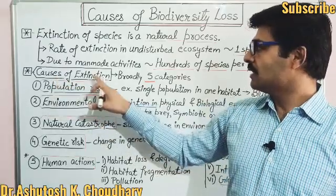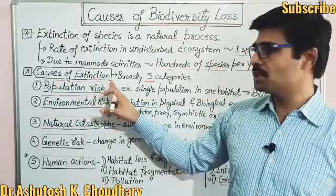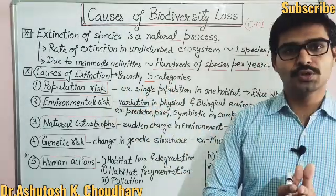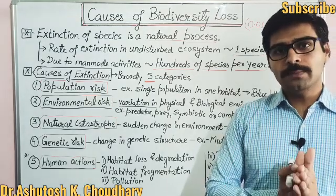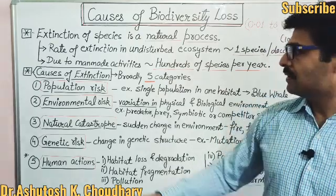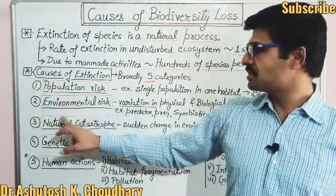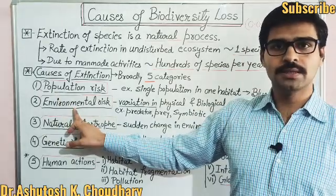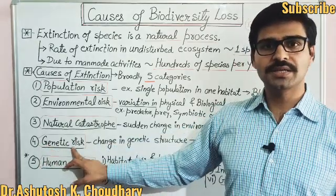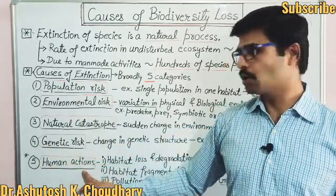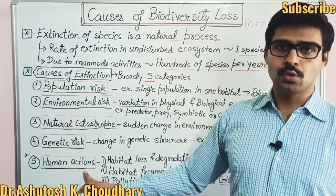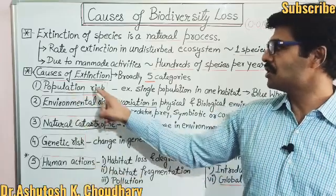Now, what are the causes of extinction? We can broadly classify the causes of biodiversity loss into five different categories: first is population risk, second is environmental risk, third is natural catastrophe, fourth is genetic risk, and fifth is human actions. Now one by one I will explain all these causes in detail.